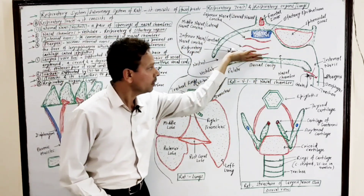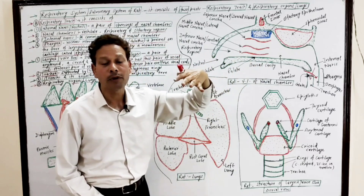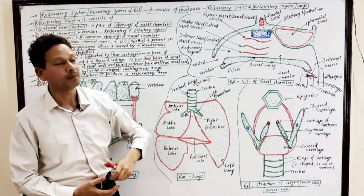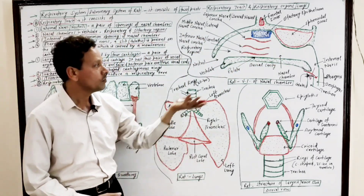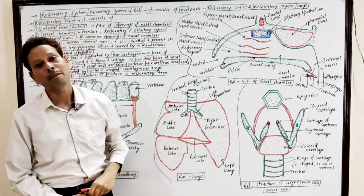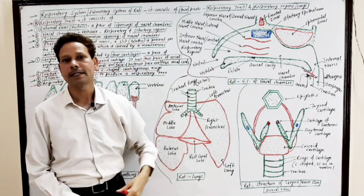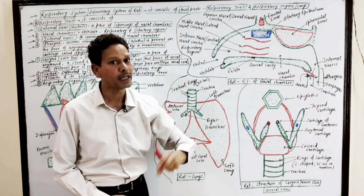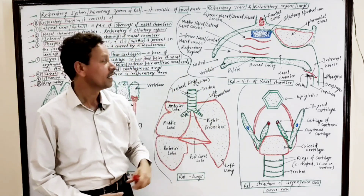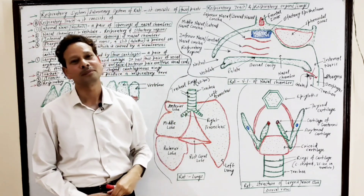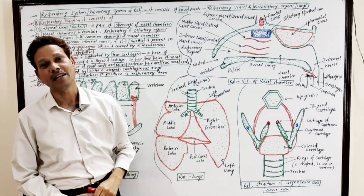These nasal chambers lie above the palate. The palate is a partition between the buccal cavity and the nasal system. This palate acts as a roof of the buccal cavity. Just above this, the nasal chambers are present. Each nasal chamber has three parts. The anterior small part is the vestibule, which is lined by skin and hair which filter the air. The vestibule also consists of sebaceous glands and sweat glands.